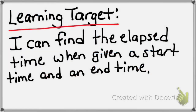Hopefully by now you can confidently say: I can find the elapsed time when given a start time and an end time. If you use the strategy with the columns exactly as shown in this lesson, it makes it very simple. Students and even adults often get these problems wrong when they don't use that strategy, so take the time, go through it step-by-step, and use that strategy. If you have any questions or concerns, please see a teacher. Good luck with this lesson.